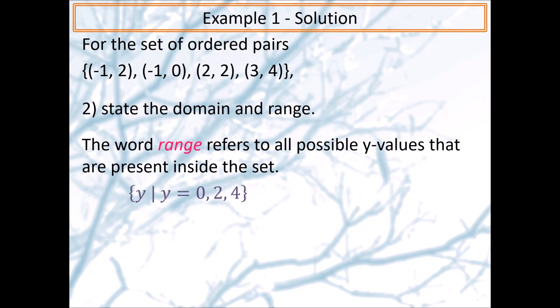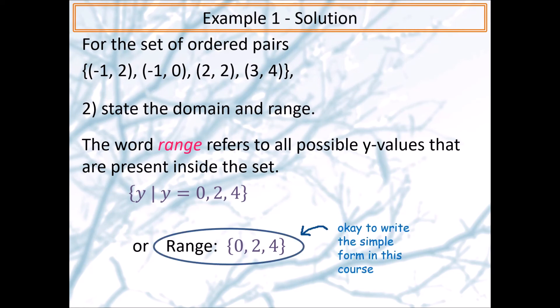So this is how we write it. We have a set of values. So y belongs to a set of values such that y equals 0, 2, or 4. Or if we write it in the simple form, we state range, and then we write a colon. And then we put the braces to represent we have a set of three numbers. So we have 0, 2, and 4. And you can write this in this course instead of the formal way of writing it.